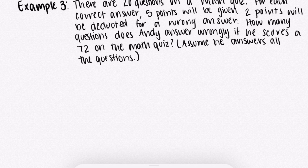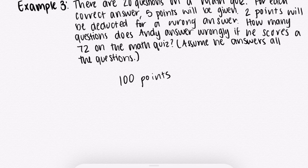Example 3: There are 20 questions on a math quiz. For each correct answer, five points will be given. Two points will be deducted for a wrong answer. How many questions does Andy answer wrongly if he scores a 72 on the math quiz? We should assume that he answers all of the questions. We will use method two from the first example. Let's assume he answered all questions correctly — if he did, he would have 100 points. But Andy only scored a 72, which means he has 28 points less.